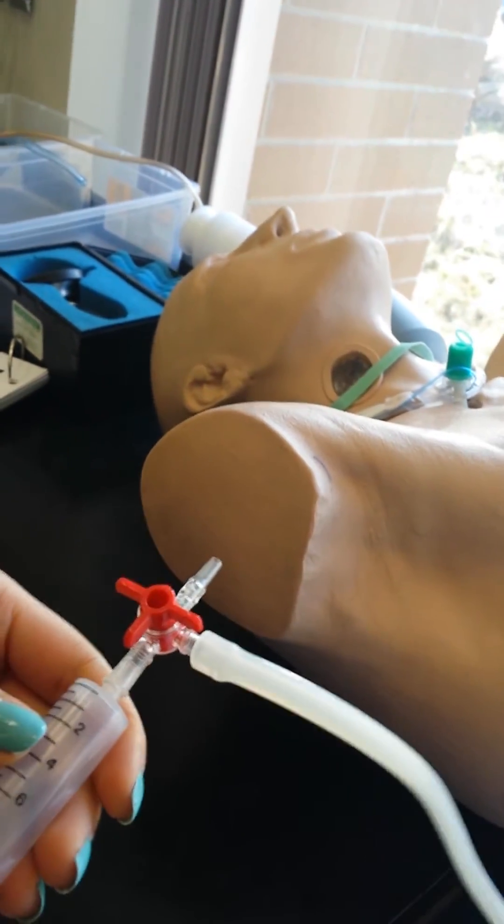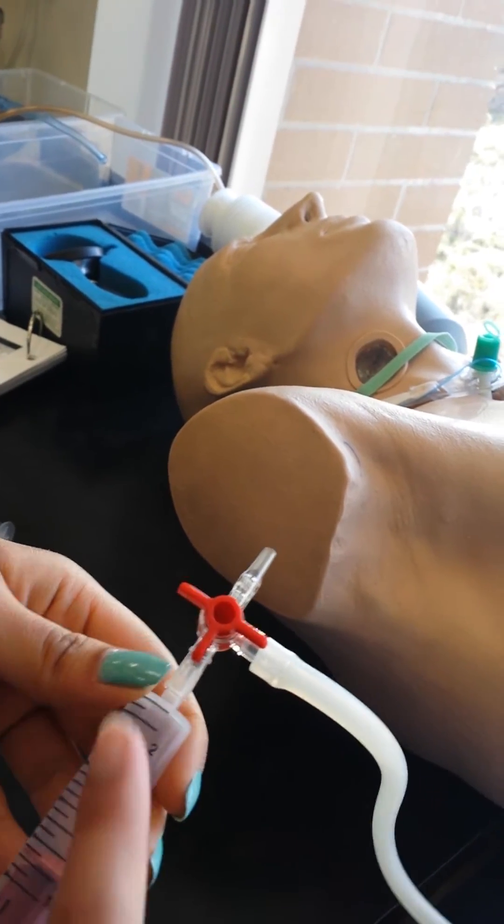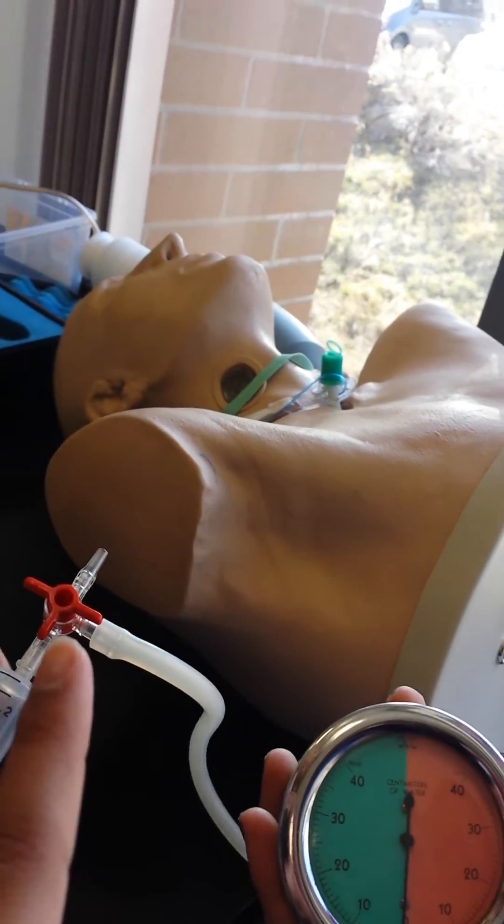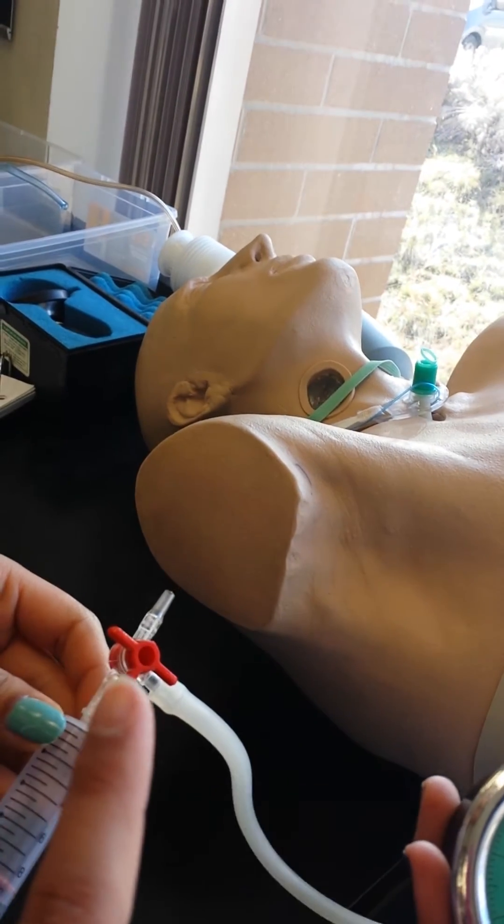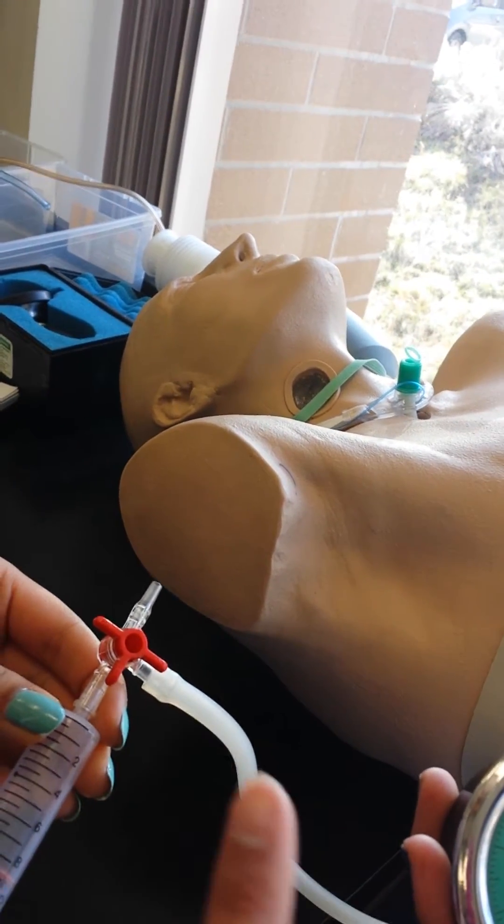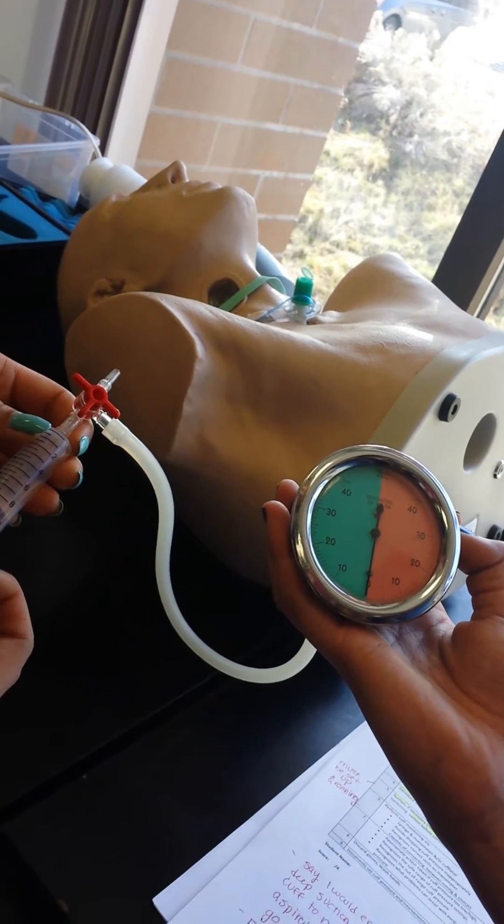You want it to go into the line all the way here because this is the line you're going to be connecting to the patient. So you have to make sure that one is pointing to the syringe and one is pointing that way. Now she's going to start adding pressure into 20.